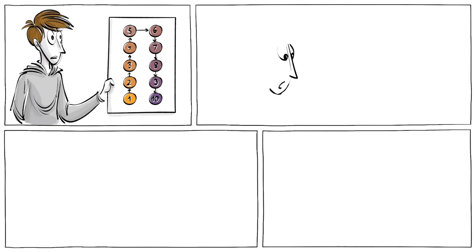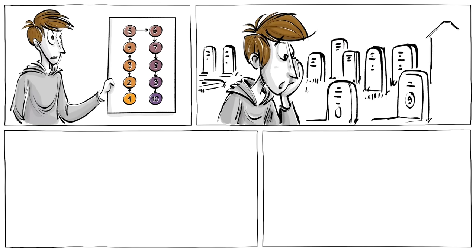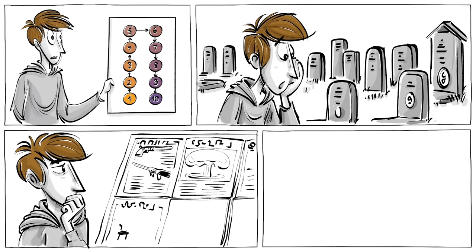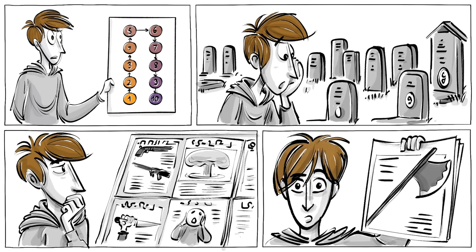The 10 stages of genocide are a framework for understanding how crimes against humanity happen so we can spot early warning signs and potentially prevent them.